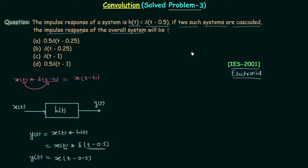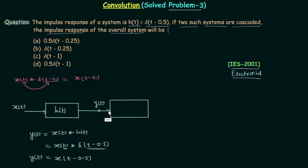According to the question, we are required to cascade two such systems — connecting the same system having impulse response δ(t - 0.5) in series. The output y(t) = x(t - 0.5) will now act as input for the second system. Let's say the output of this second system is ỹ(t).